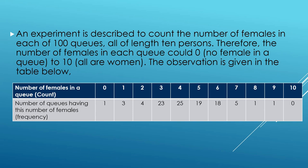Suppose an experiment is designed to count the number of females in each of 100 queues, all of length 10 persons. There are 100 queues and in each queue the maximum number of persons is 10. We count the number of females in each queue. The number of females in each queue could be 0 — no female — or 10 — all persons are female. The observations are given in the table.